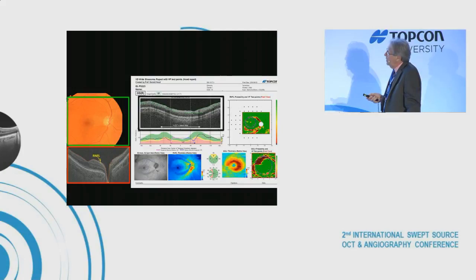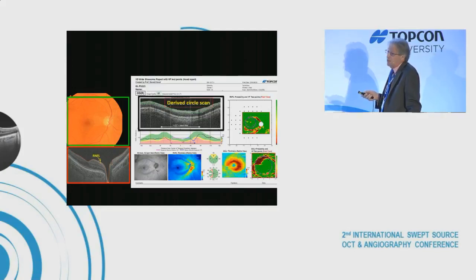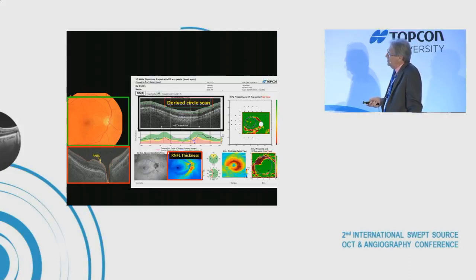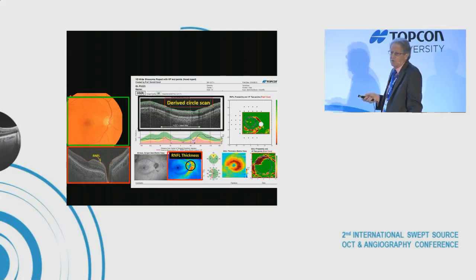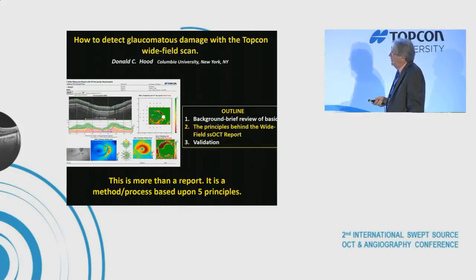The circle scan is derived from the wide field scan. The software takes the retinal nerve fiber layer thickness, samples an annular region, averages the OCT information, and produces a derived circle scan — the equivalent of a traditional circle scan.